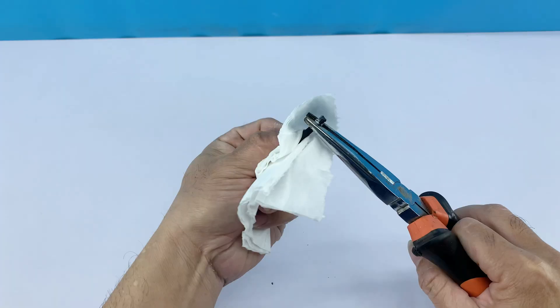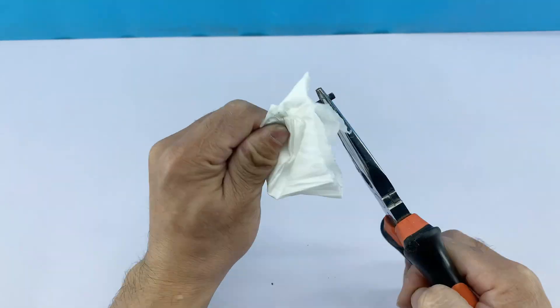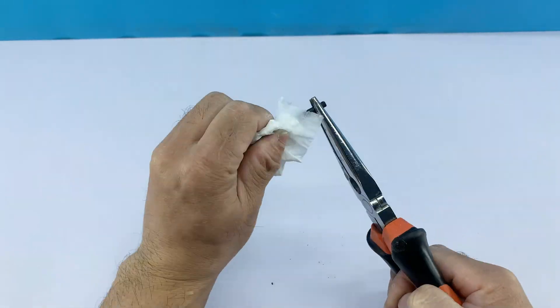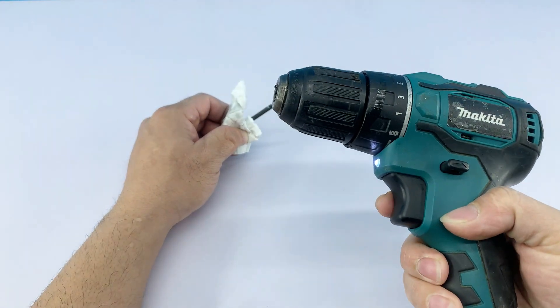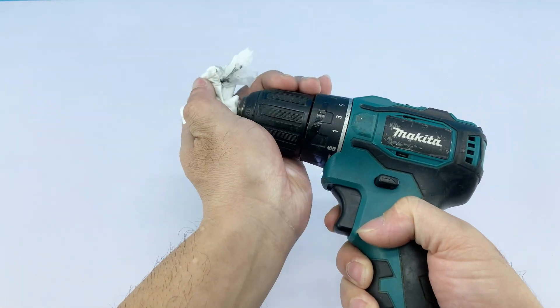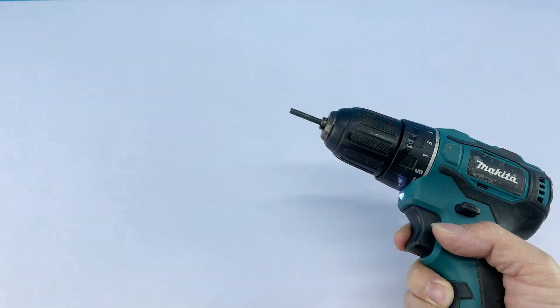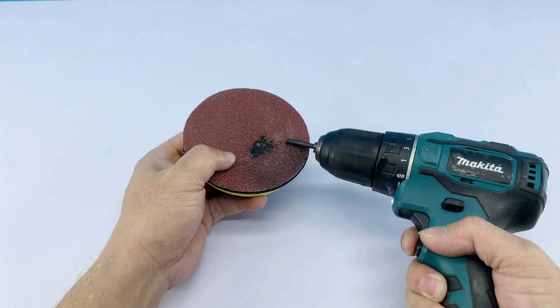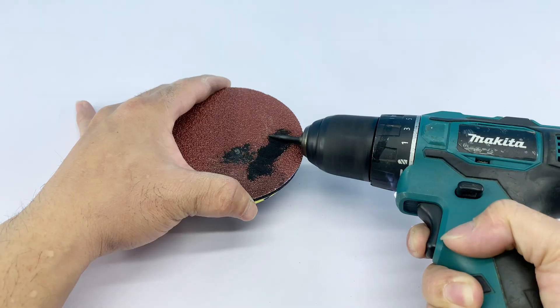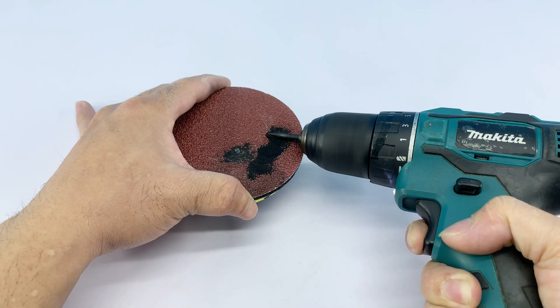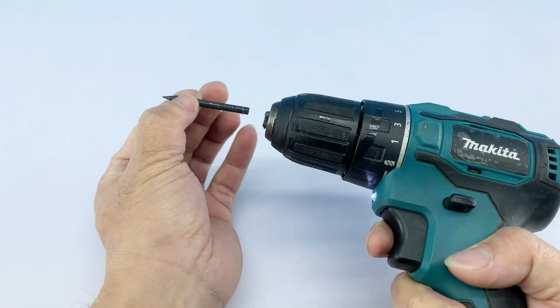Once I have the carbon rod, I'll clean it thoroughly. I then mount the carbon rod into my drill and use sandpaper to meticulously sharpen one end to a fine point. This sharp tip will allow for precise heat concentration, which is essential for accurate work.